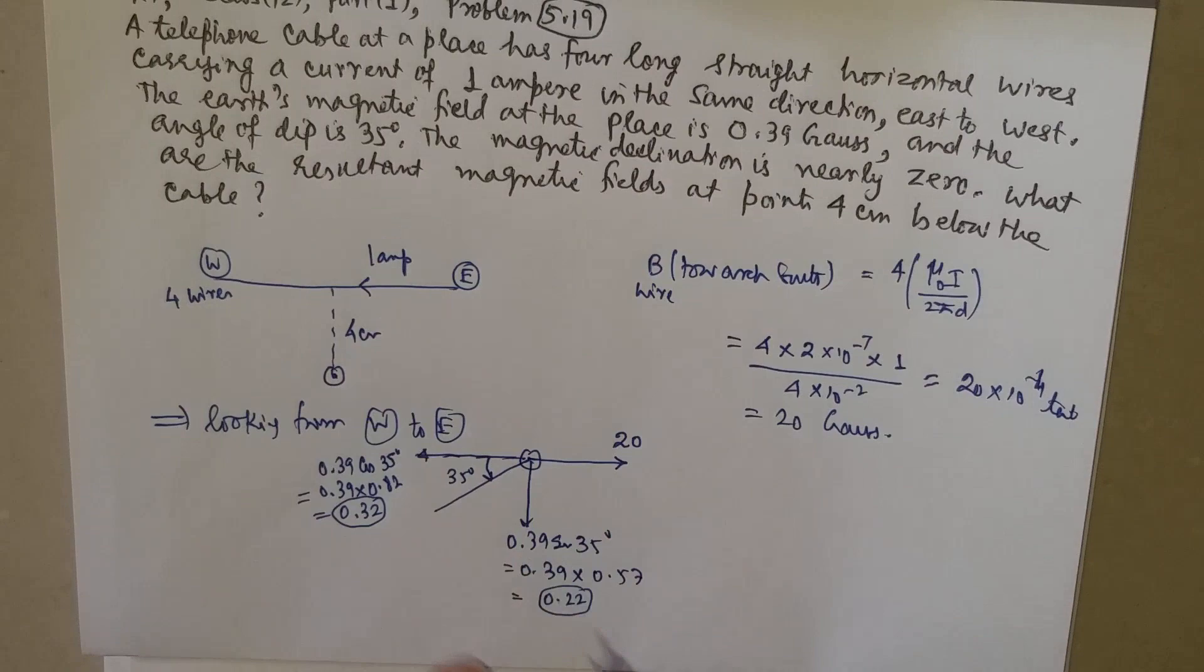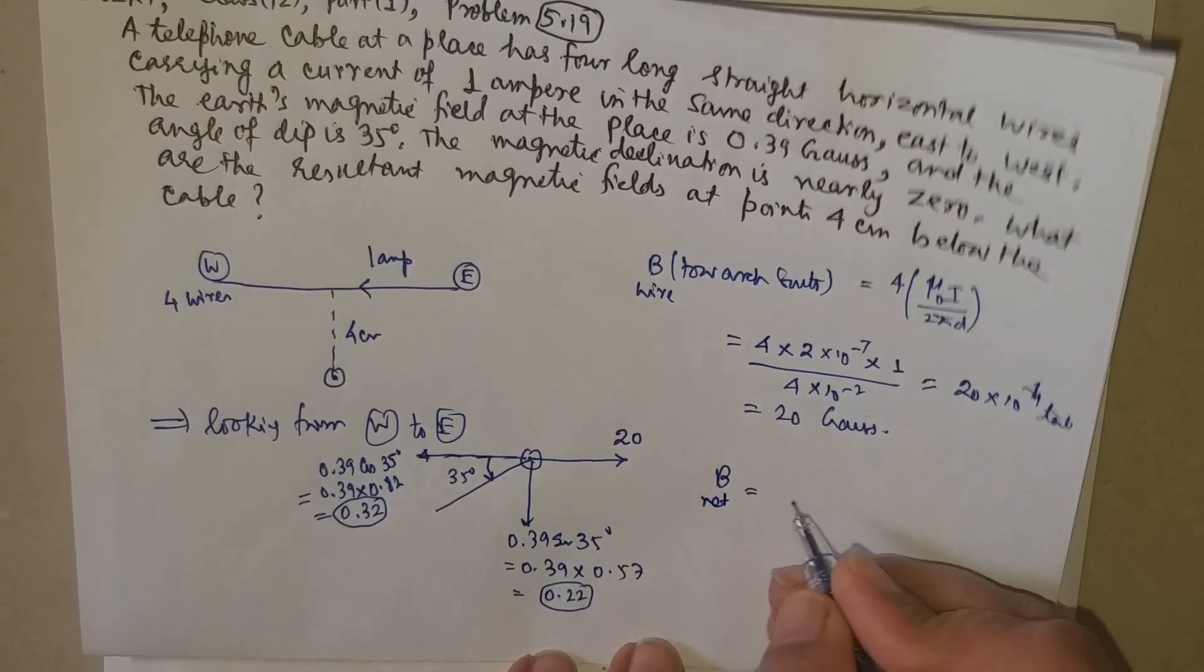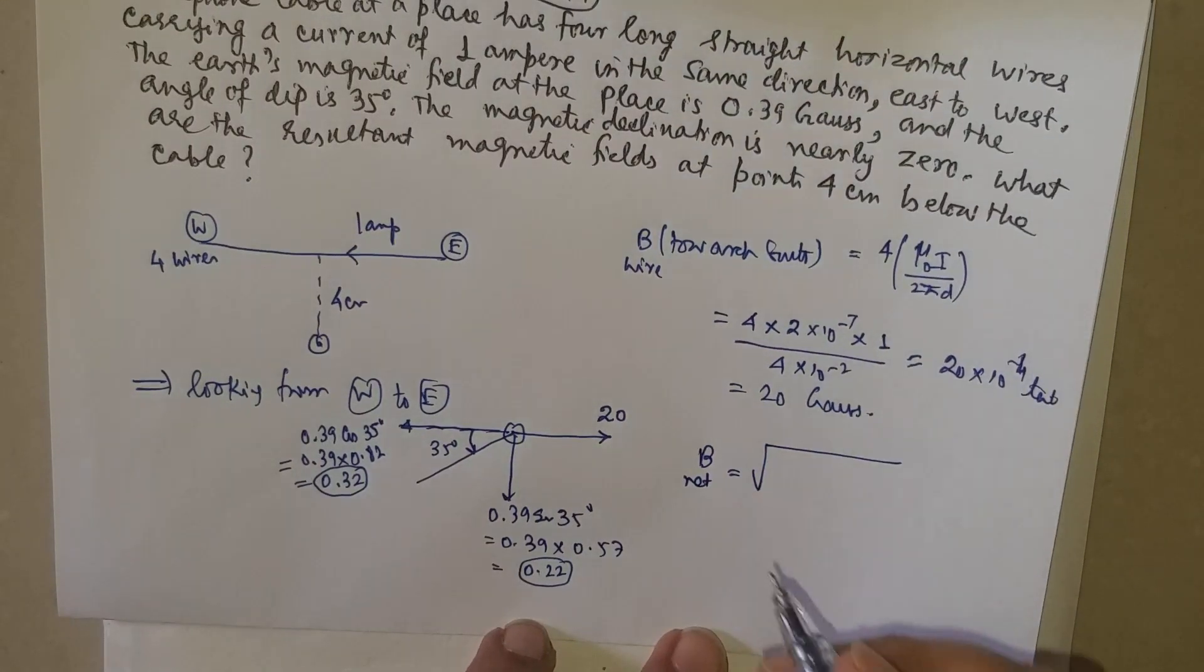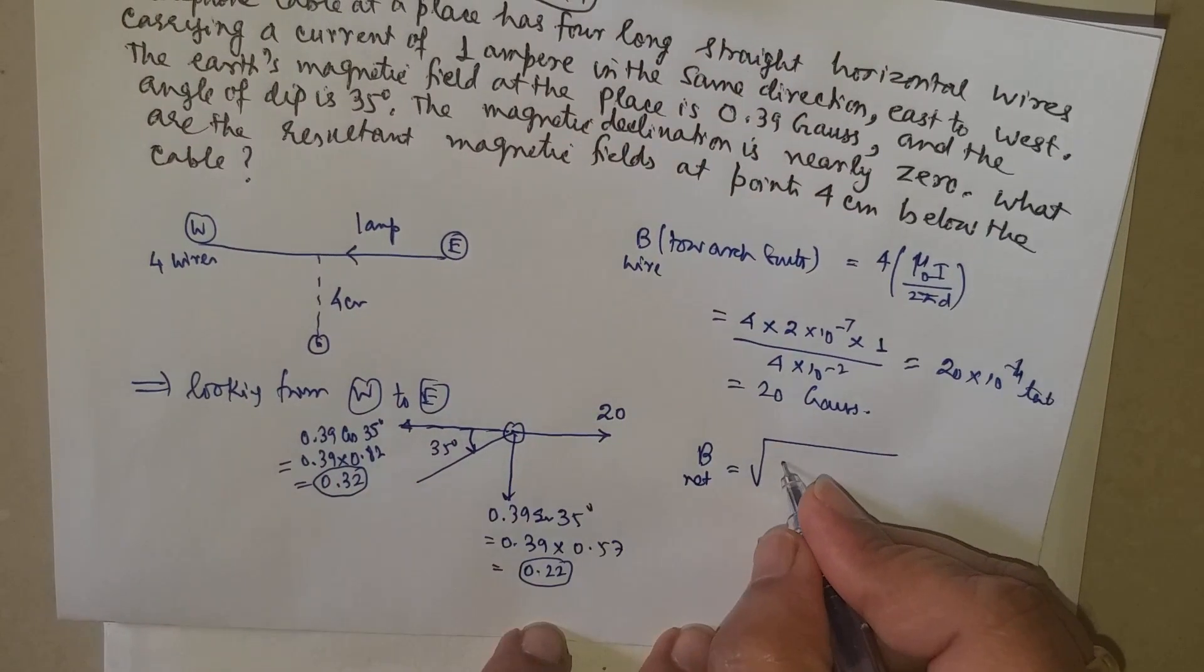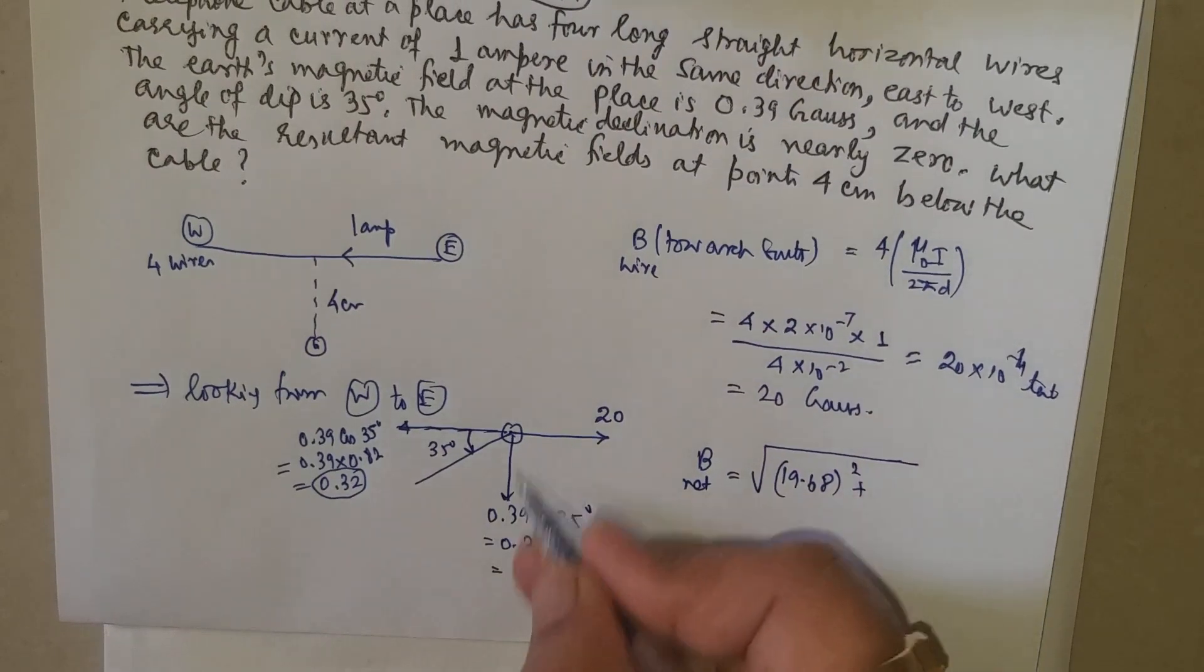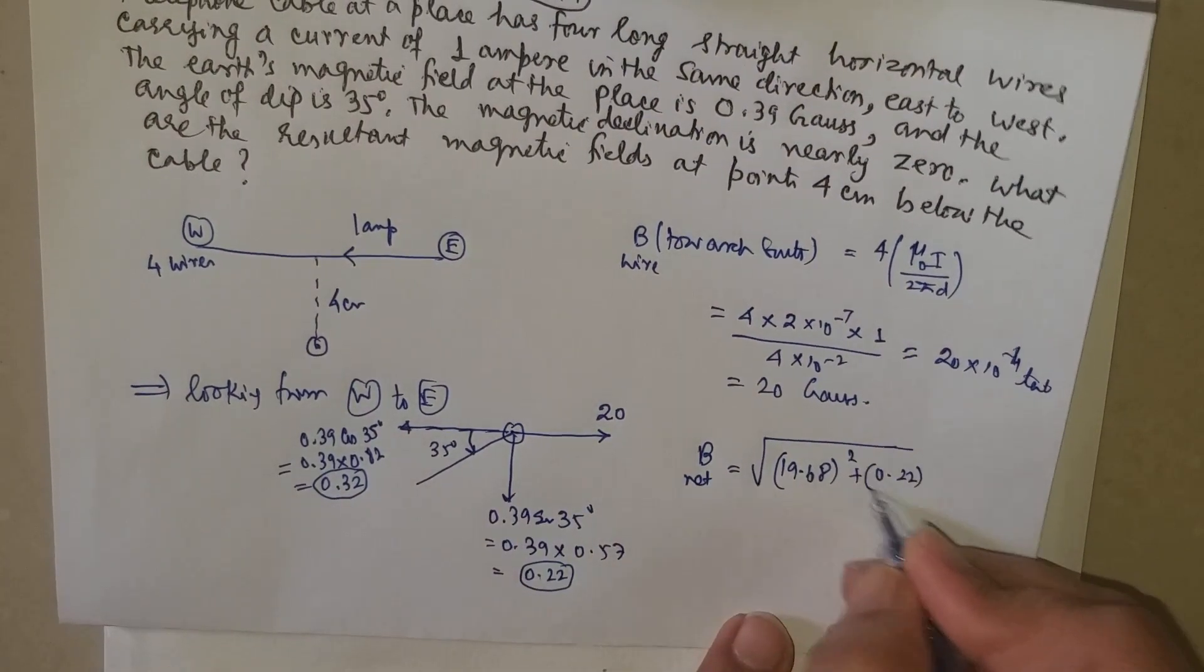And this vertical—so the net magnetic field due to the earth as well as due to the wire will be √((20 - 0.32)² + 0.22²), that is √(19.68² + 0.22²).